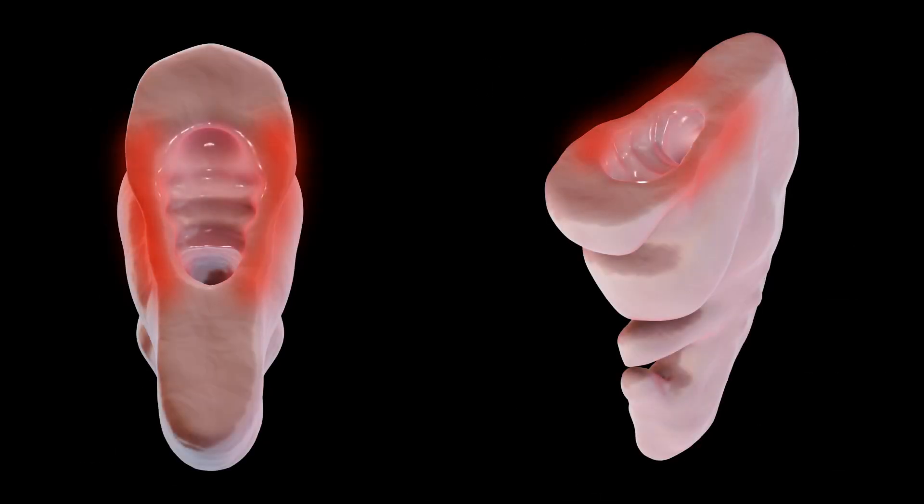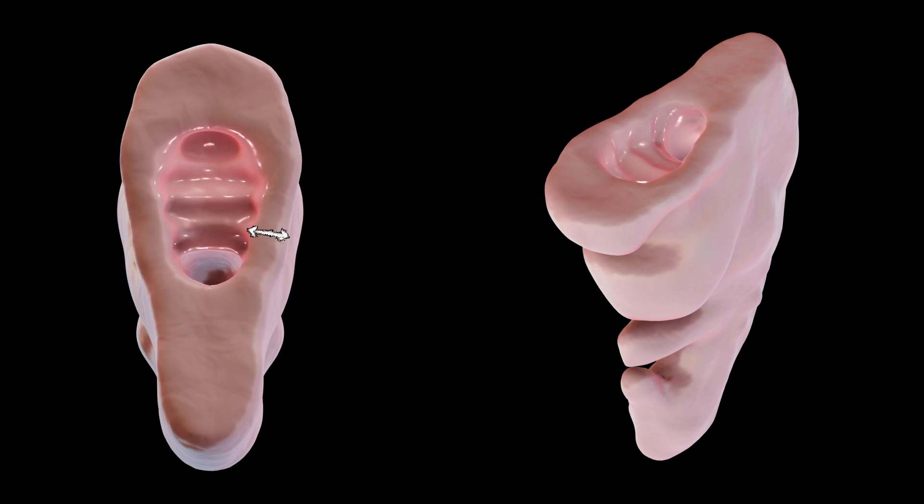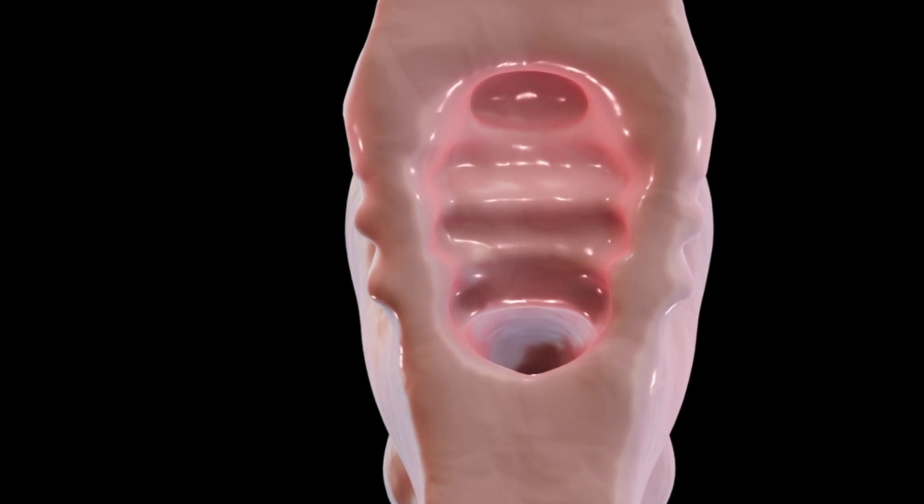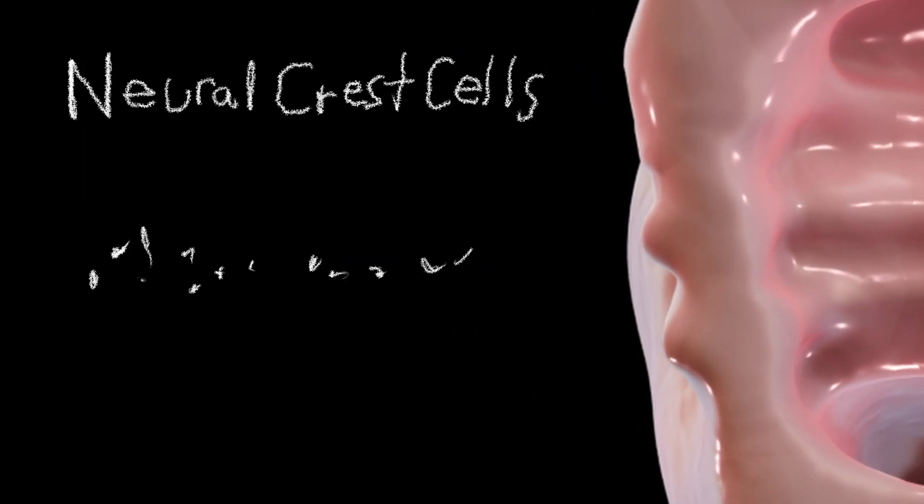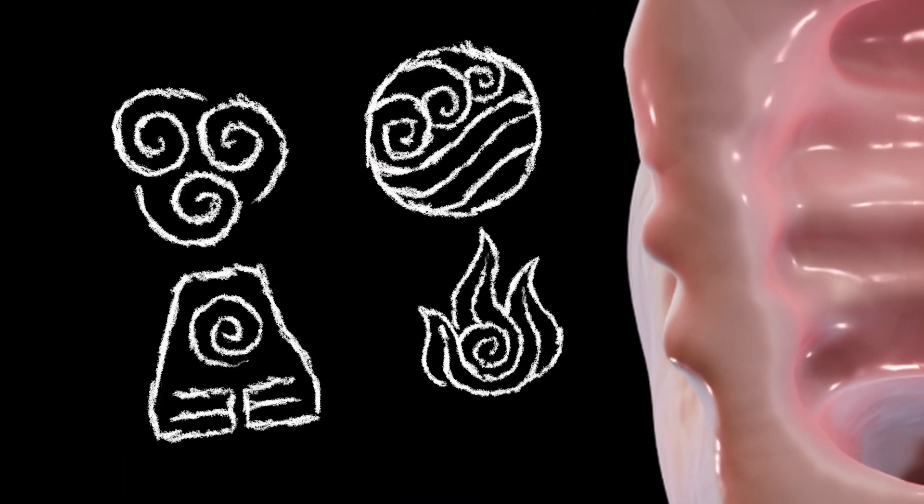Meanwhile, the mesoderm plays its part too. It thickens within each arch to contribute to the muscles and blood vessels, ensuring that the arches aren't just decorative. The ectoderm on the outside also folds inward to form grooves that correspond to endodermal pouches, further defining each arch. Together, these three layers, neural crest cells, mesoderm, and ectoderm, work in harmony to transform the pharyngeal apparatus into the intricate anatomy of the head and neck.